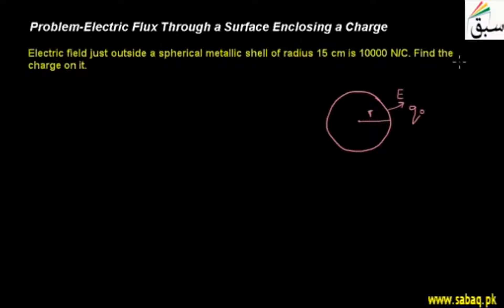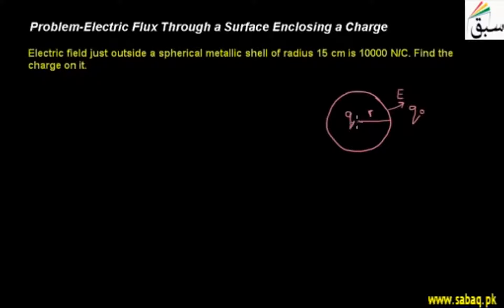We have to find the charge on the shell. There is a charge on it, and that is why the electric field is produced — the electric field is due to a point charge placed on it.